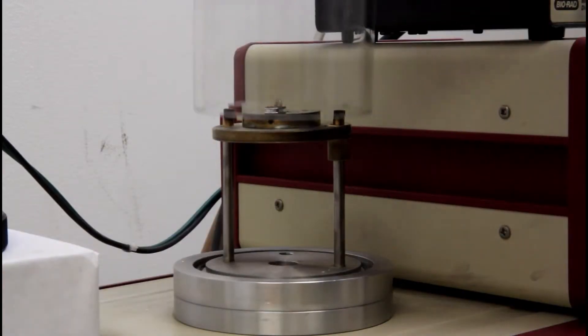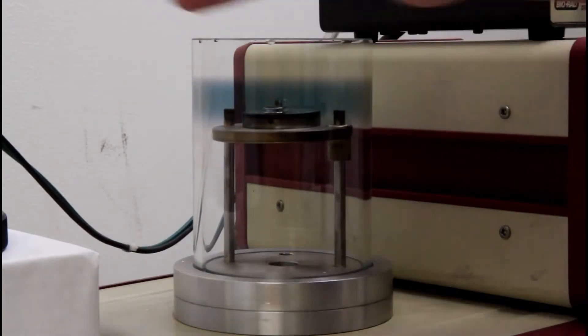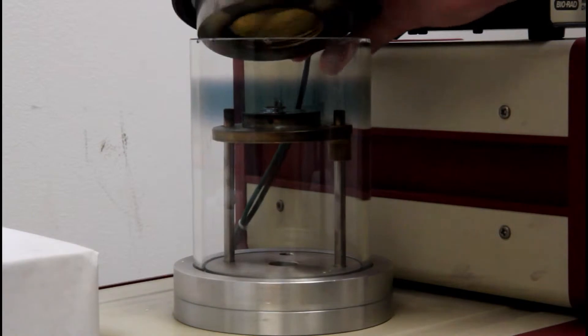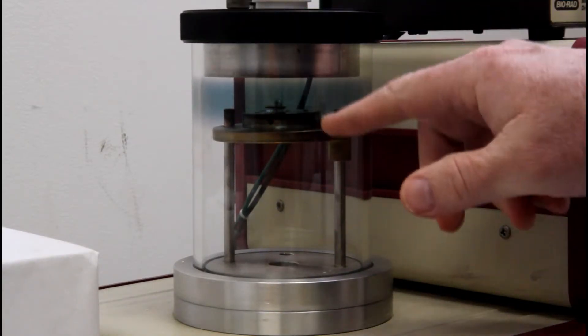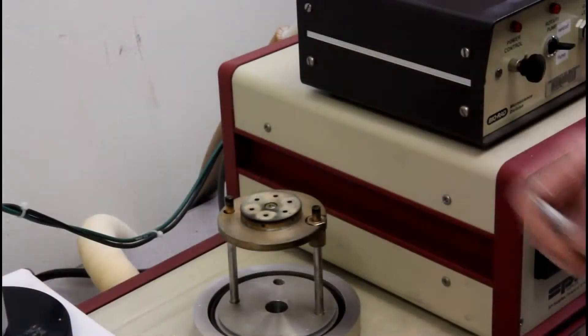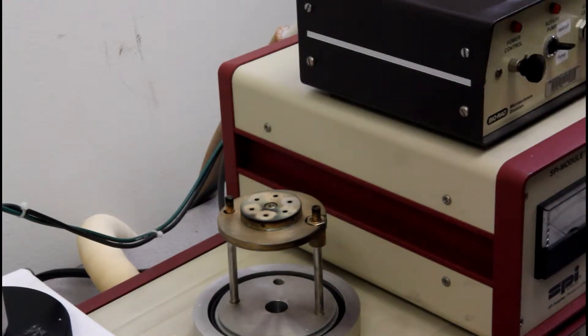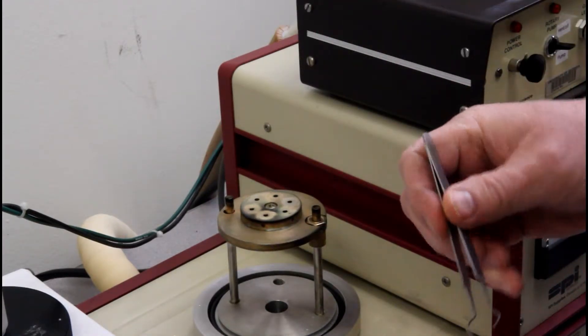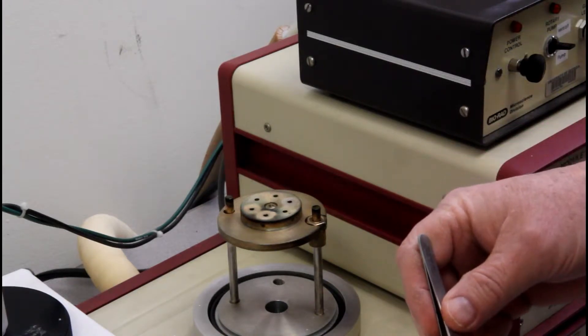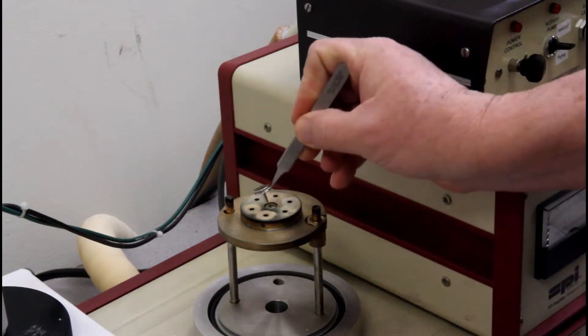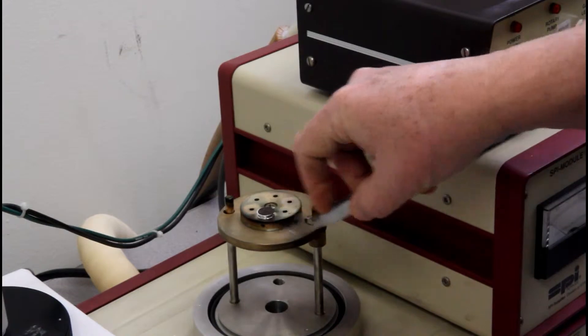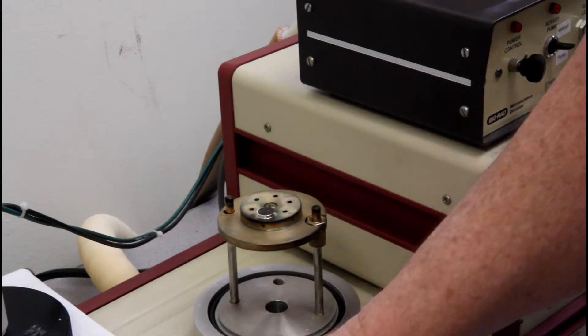Once you have it the right height, you can check it to make sure that it's the right distance away. You can see that this sputter coater holds up to six samples. So you'll want to take your sample on a stub and place it in one of these, and then carefully replace the glass.